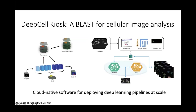These methods are only useful if they are shared widely. Last year we published a paper in Nature Methods describing a software package called DeepCell Kiosk, which enables dynamic scaling of deep learning-enabled image analysis pipelines in the cloud. The scaling is dynamic — as more data is sent for processing, the software recruits more computational resources to minimize latency. This software currently powers our web portal, DeepCell.org, which hosts several of the models I described in this talk.